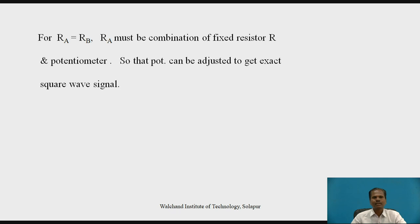For RA equal to Rb, resistor RA must be a combination of a fixed resistor R and a potentiometer, so that the potentiometer can be adjusted to get an exact square wave signal at the output of the square wave oscillator circuit.